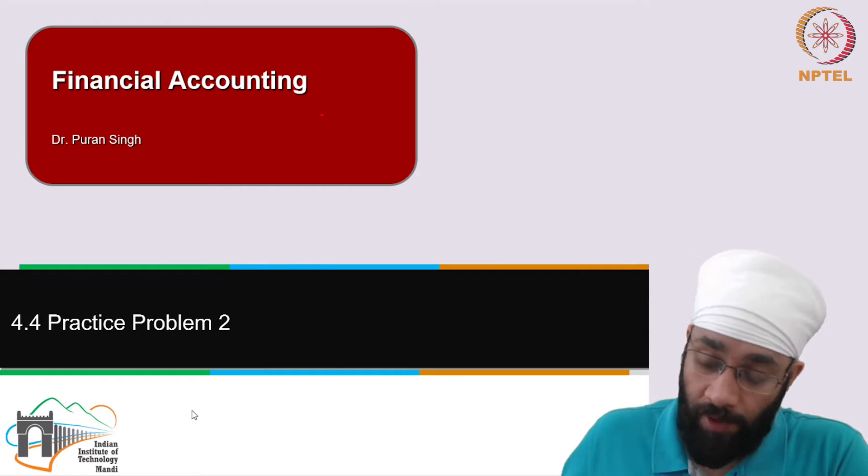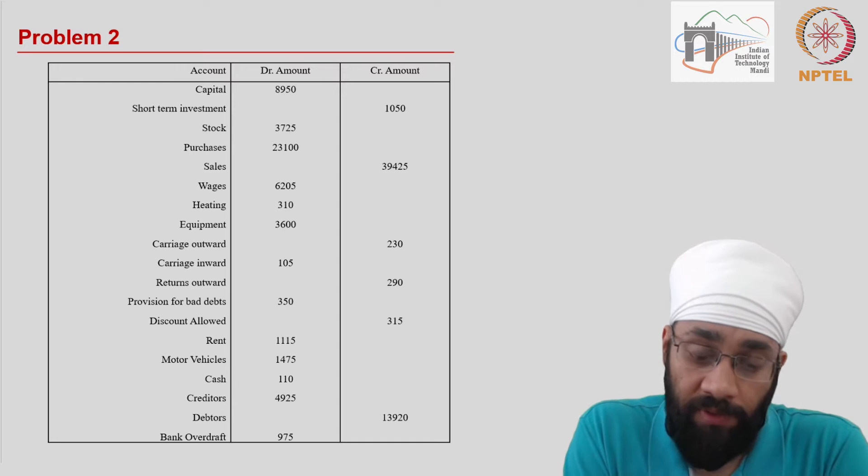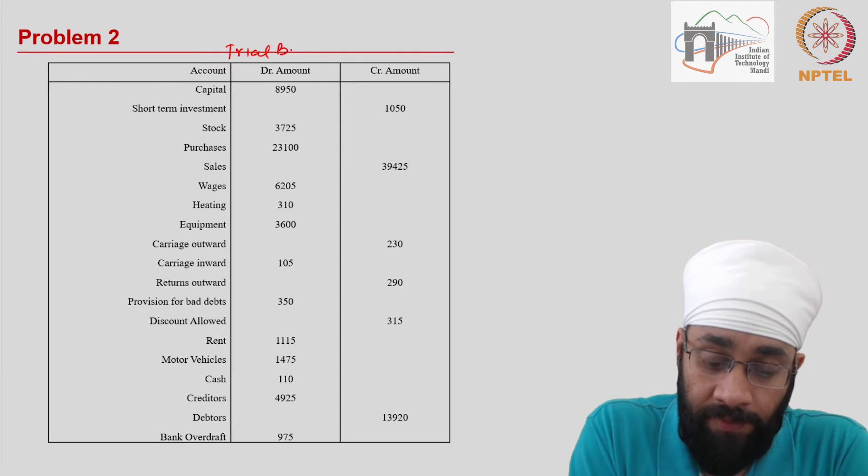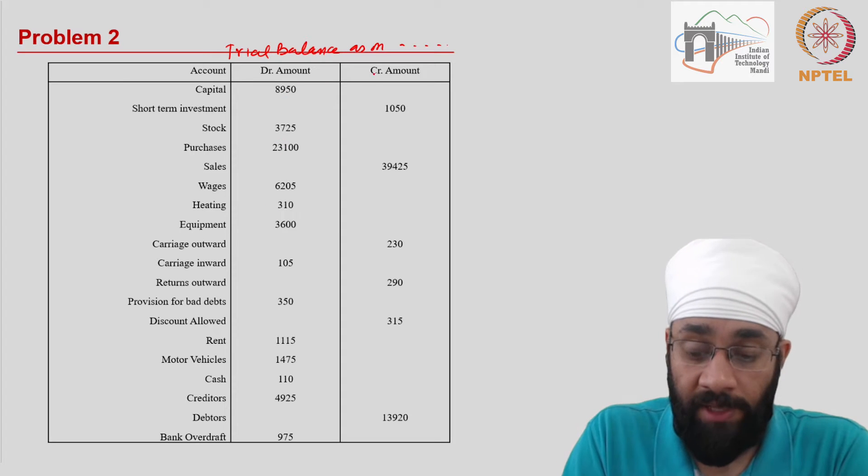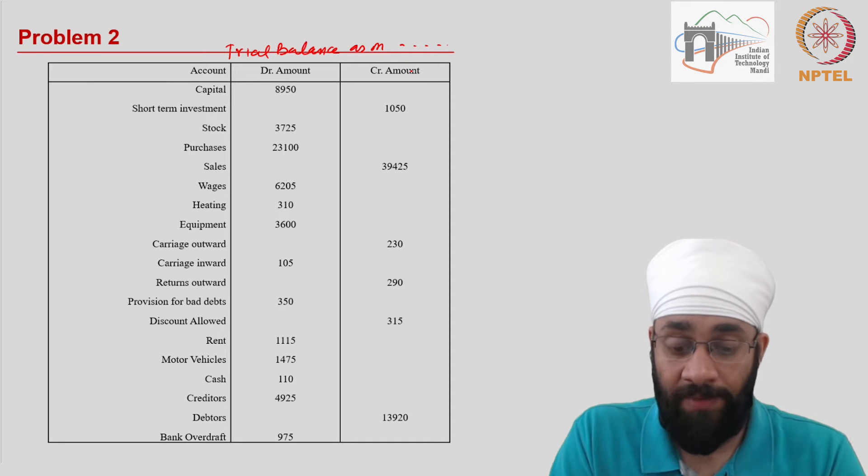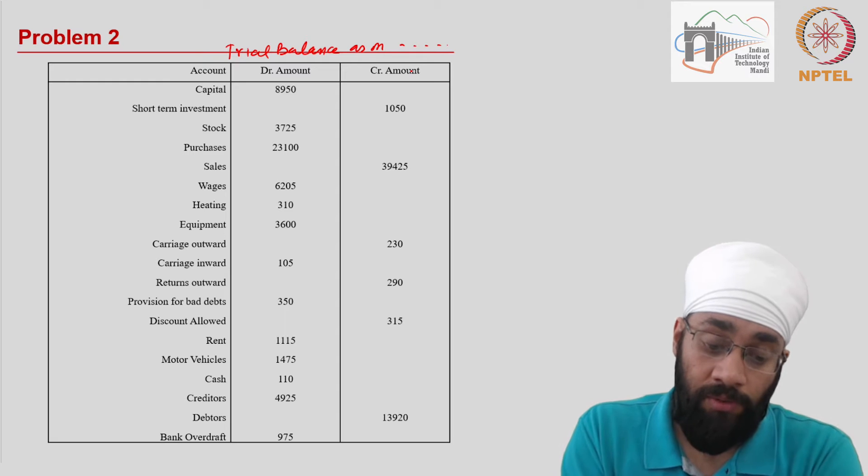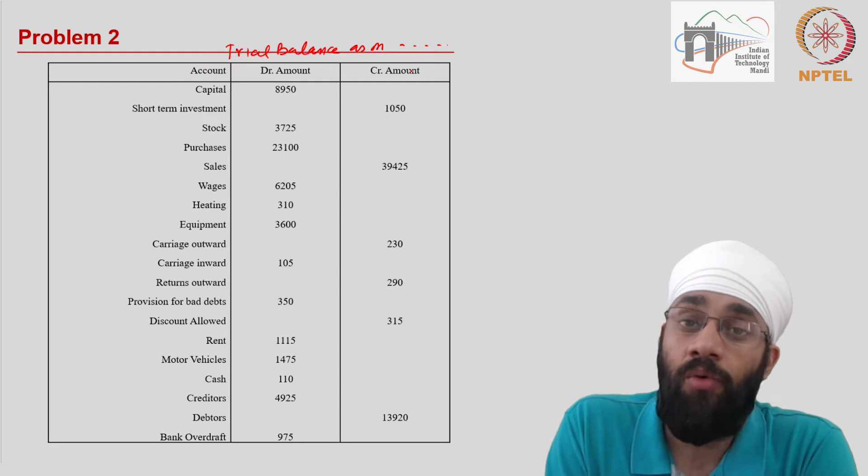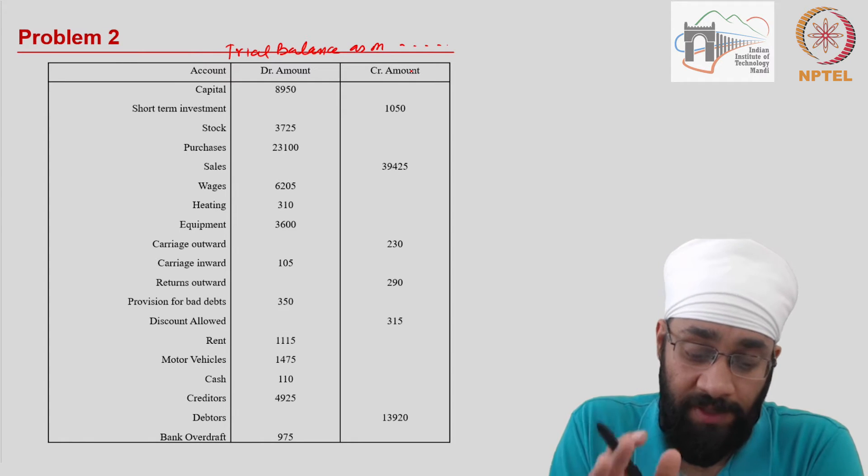Let us do another practice problem. In this practice problem, we have been given a trial balance. This is a trial balance as on a given date with a list of accounts and amounts written in debit and credit. What we have to do is verify that this trial balance statement has been prepared accurately or not. If there is any inaccuracy, we need to correct it and prove that we have corrected the trial balance.